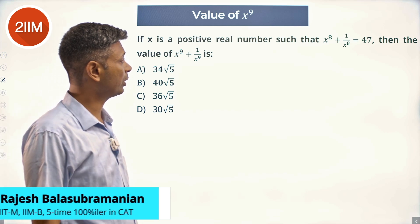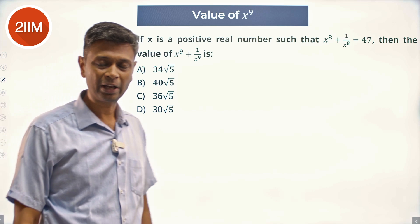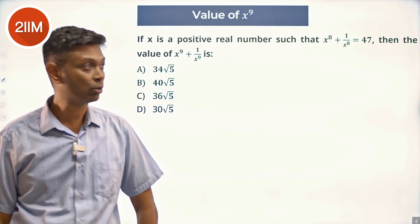If x is a positive real number such that x^8 + 1/x^8 = 47, then the value of x^9 + 1/x^9 is what? Nothing dramatic about this question.